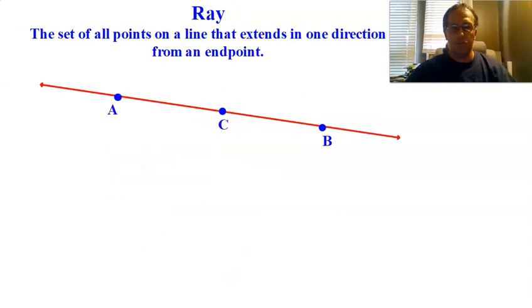Next one we're going to talk about is Ray. Ray is the set of all points on a line that extend in one direction from an endpoint. So here I have this line. You could call it line AC, AB, whatever.